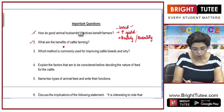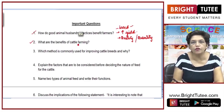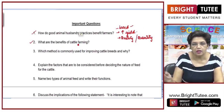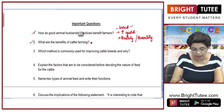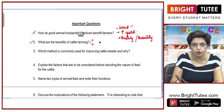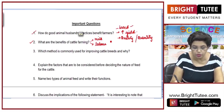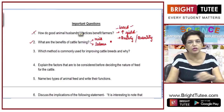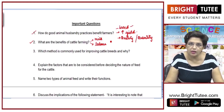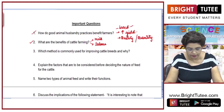Question number 2: what are the benefits of cattle farming? Cattle farming is utilized for two purposes. First, to obtain milk from dairy cattle, and second, as labour. Their labour is utilized to work in the farms and to carry loads.